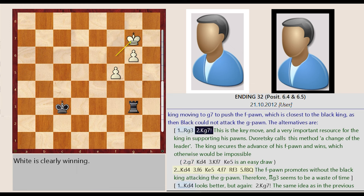King f6 g7. This is the key move and a very important resource for the king in supporting his pawns. Dvoritsky calls this method a change of the leader. The king secures the advance of his f-pawn and wins, which otherwise would be impossible.